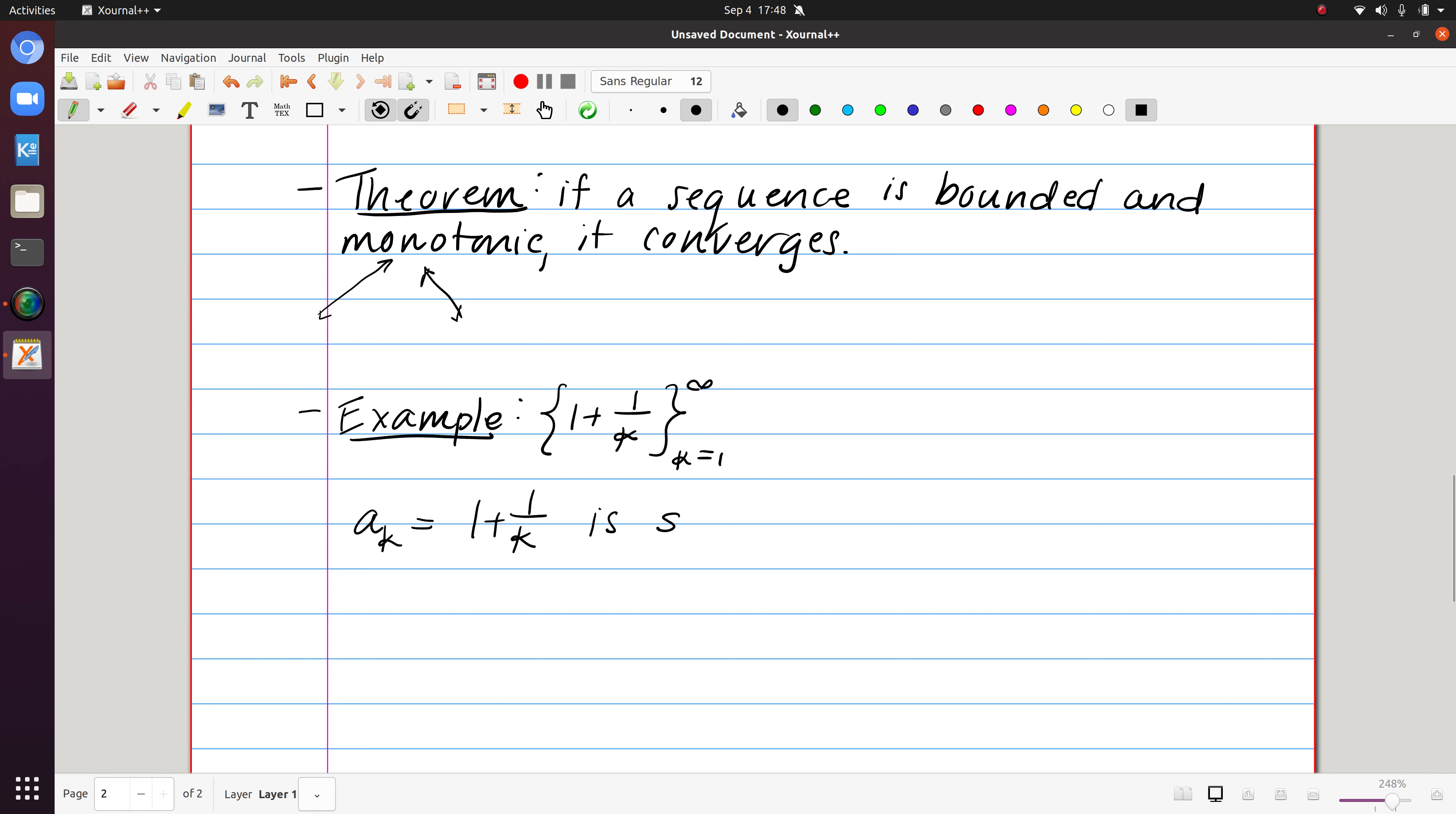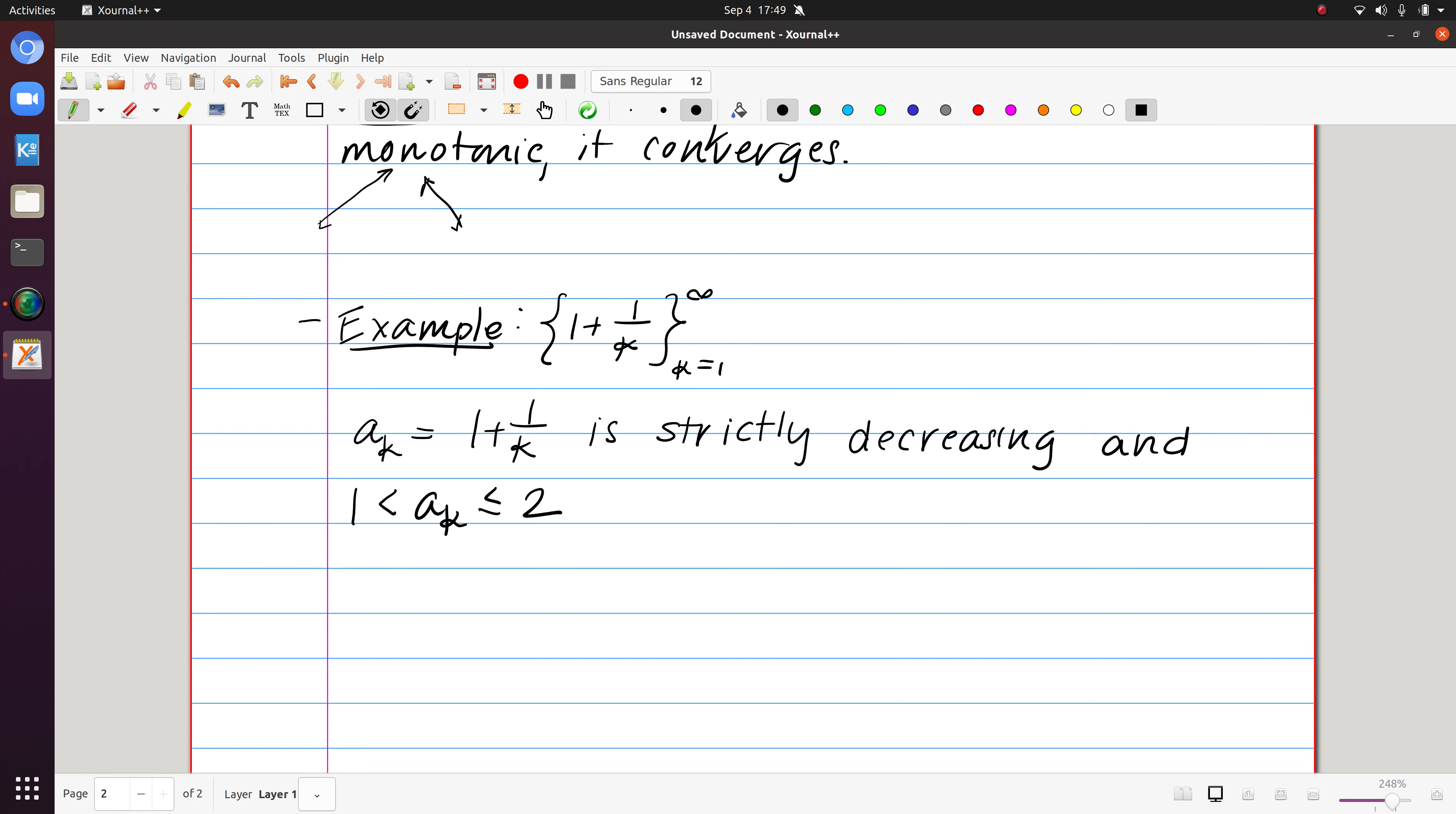And first of all, notice that this is strictly decreasing, right? This starts at 2 when k is equal to 1. And as I continue to increase the value of k, I'm adding smaller and smaller values. So it satisfies the monotonic property, but also it's bounded. So the largest this can ever be is 2, which happens when k is equal to 1. And it's also always adding a positive number onto 1. So we could bound this below by 1. So in this instance, as I think about this, I can say that by the above theorem, this sequence must converge.